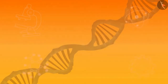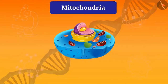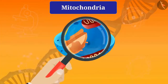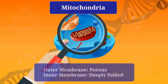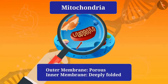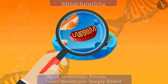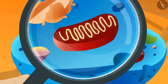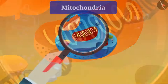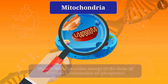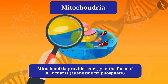Now we will learn about mitochondria. Mitochondria have a double-layered membrane: one is the outer membrane and the other is the inner membrane. The outer membrane is porous and the inner membrane is deeply folded.